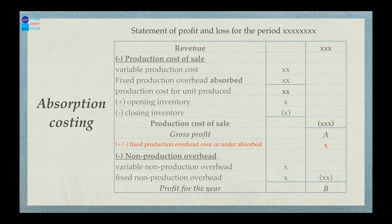The production cost of sales leads to gross profit, then we adjust for fixed production overhead — either over-absorbed or under-absorbed. The variable production cost of sales is the variable production cost. We also account for fixed production overhead, comparing the absorbed amount to the actual fixed production overhead incurred.